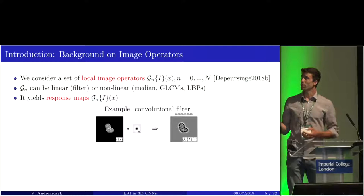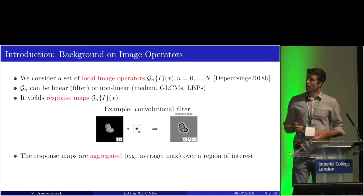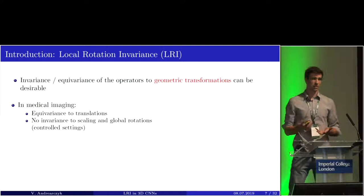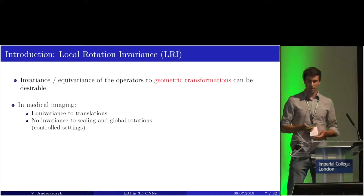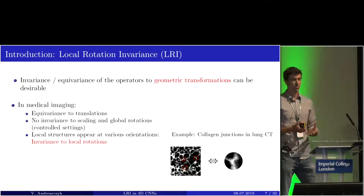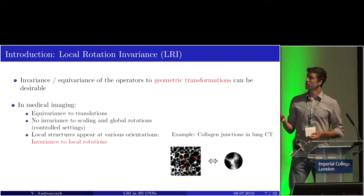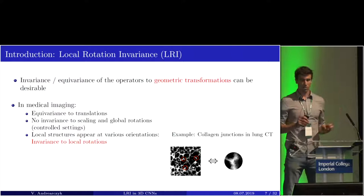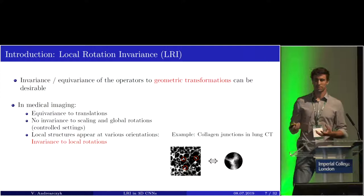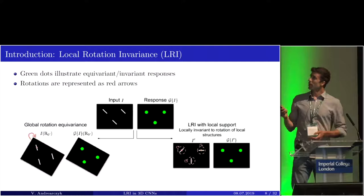We consider a set of local images — here the border of a region and some texture inside the region. The response usually needs equivalence to translations, as in most computer vision tasks. We generally do not need invariance to scaling and global rotations because of the controlled settings of acquisition. But in medical imaging, we often have local structures that appear at various orientations — for example, collagen junctions in lung CT, which are T or Y patterns occurring at different positions and orientations. We would like to detect all these patterns regardless of their orientation, so we have the need for local rotation invariants.